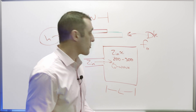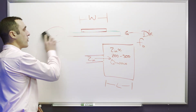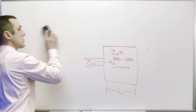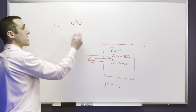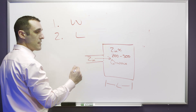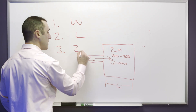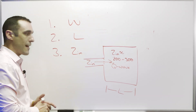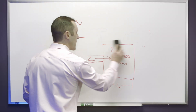Let's outline the process for this calculation. First we determine W, the width. Then we use W to determine the length. Then using W and L we can get the input impedance — number three. This is the order in which we need to do everything to calculate what we need for our patch antenna. So let's get started with the width.